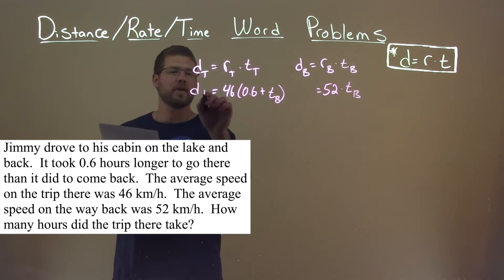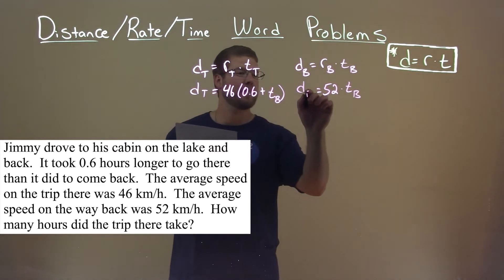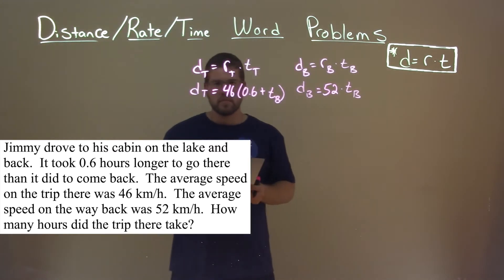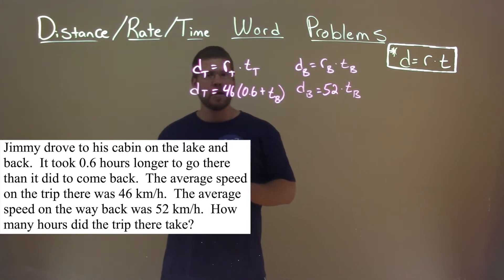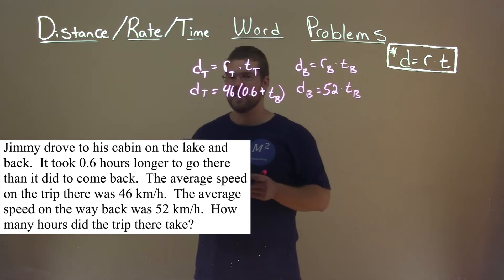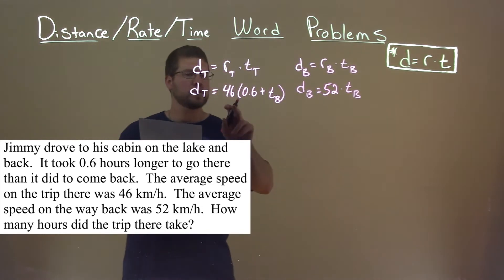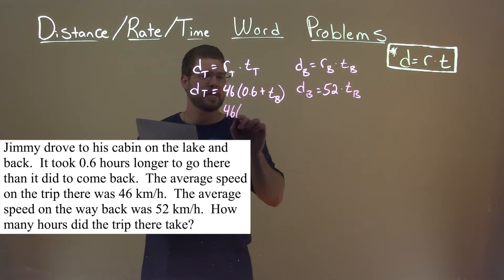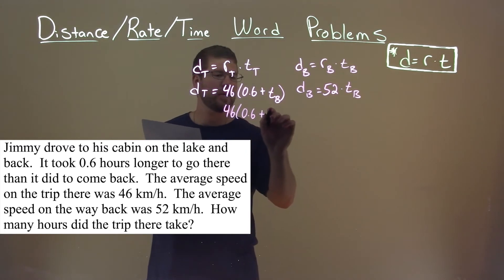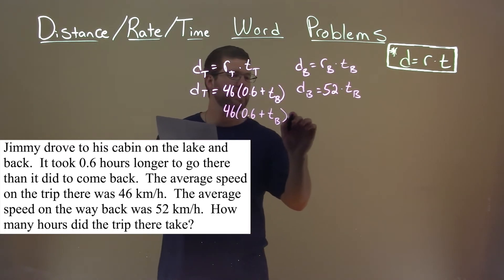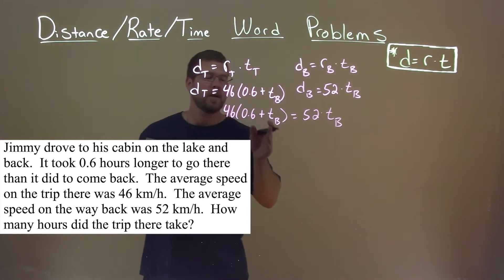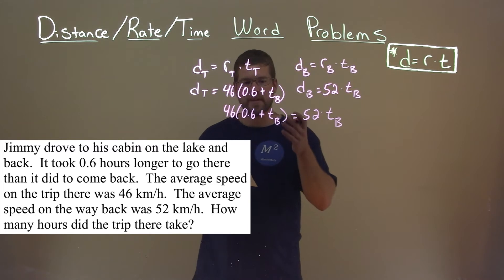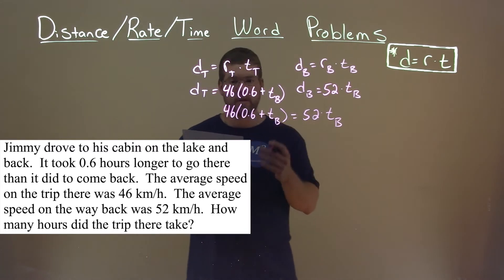We have the distance there and the distance back. Well, one thing we do know is the distance there is the same thing as the distance coming back. So these two equations can be set equal to each other. We do that: 46 times 0.6 plus T_B is equal to 52 times T_B. Now we just have one variable, so we solve for the time coming back.